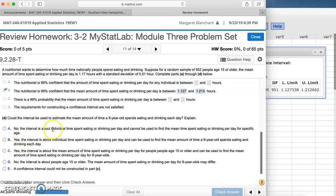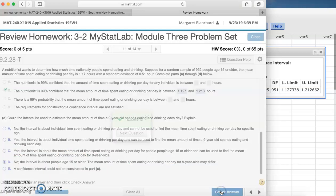So we know it's either going to be A or D. So here it says no, the interval is about individual time. That doesn't sound right. Here D says no, the interval is about people age 15 or older. The mean amount of time spent eating or drinking per day for nine-year-olds may differ. And that is our answer. So check answer. Excellent.